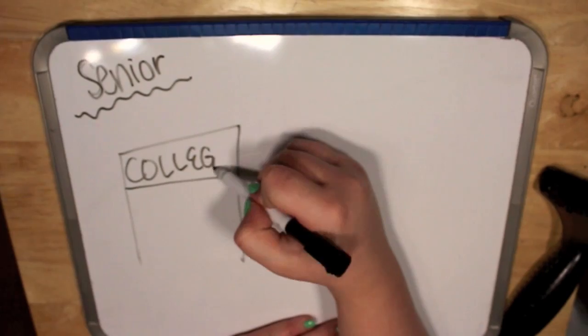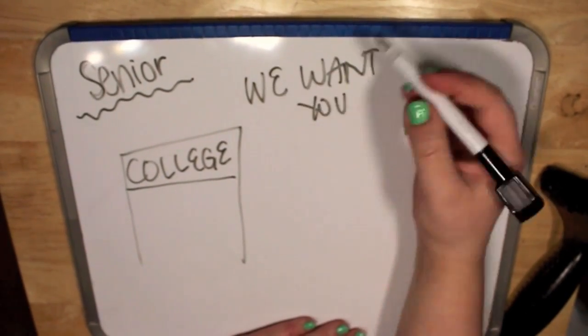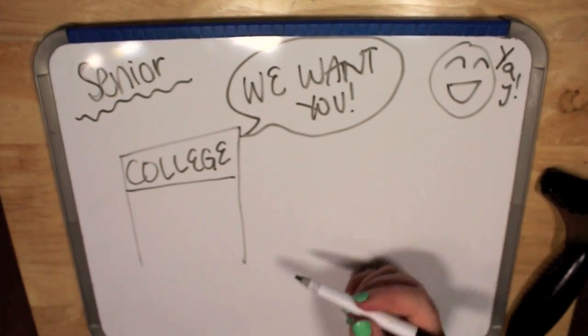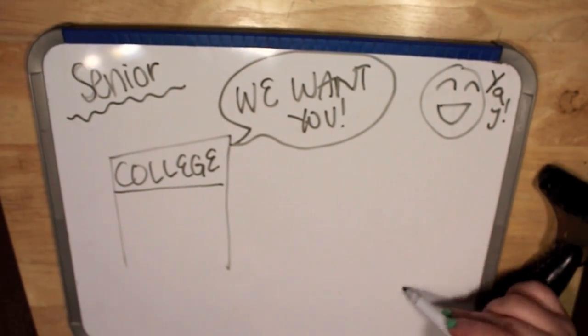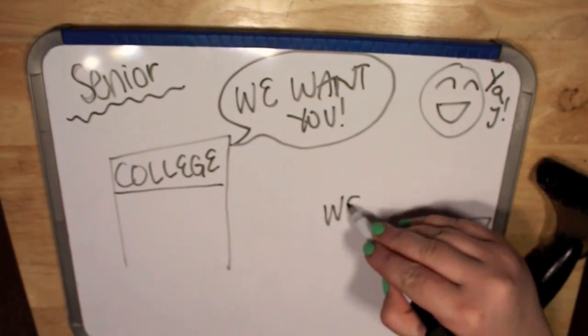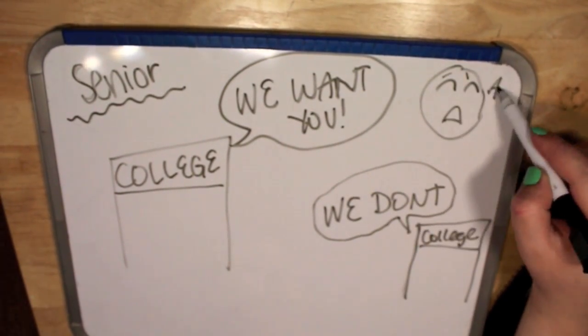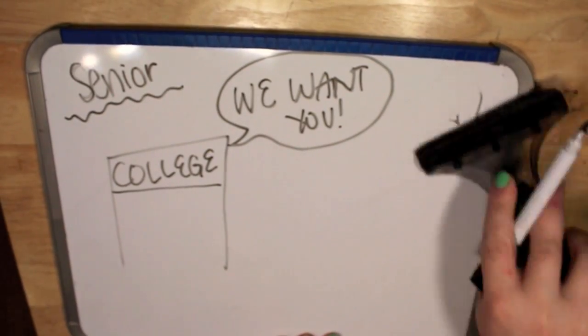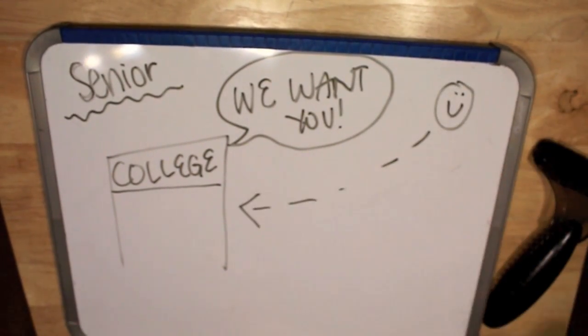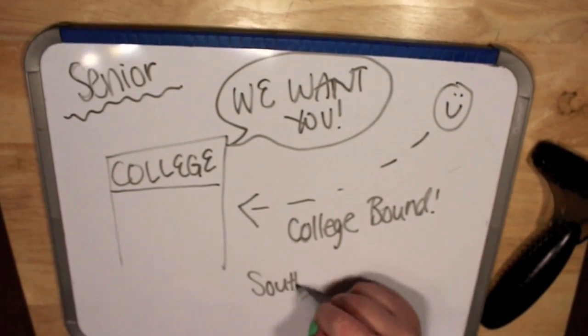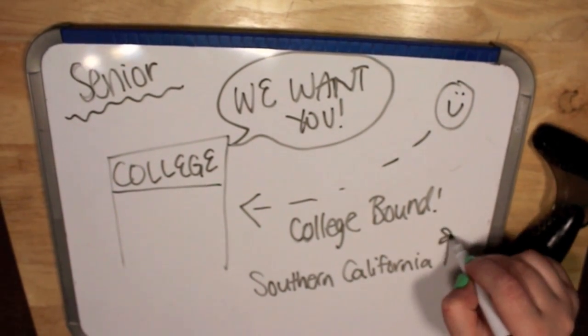And now, earlier this year, I started hearing back from colleges that I applied to. And I was really feeling on top of the world, and I kept getting these acceptance letters. And I was really excited because I applied to 11 schools. And then the school I wanted to go to didn't accept me. So it was really upsetting at the time. But now I think it's for the best because I think where I'm going is going to be perfect for me. And I officially committed to a college a few days ago. And I'll be going to college this fall in Southern California.